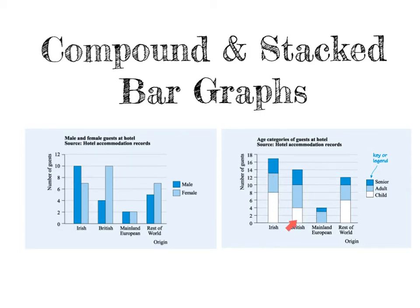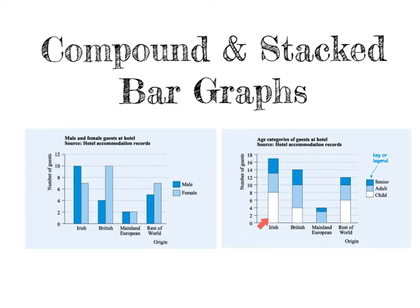So you will need to subtract values from each other to determine how many there are in the top sections of the bar. For the British one, there are 4 children. From 4 to 10 is 6, meaning there are 6 adults, although the bar goes up to 10 it started at 4. And then from 10 it goes to 14, meaning there are 4 seniors. Be very careful when you are given a stacked bar graph because you will have to do calculations to interpret all the information.